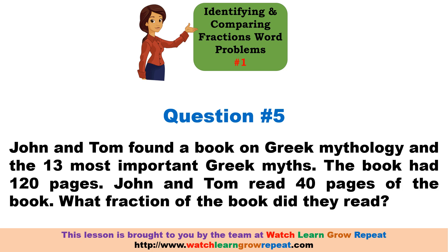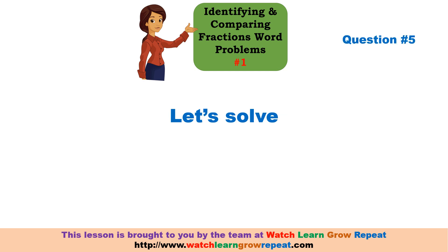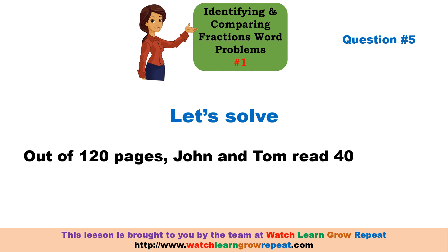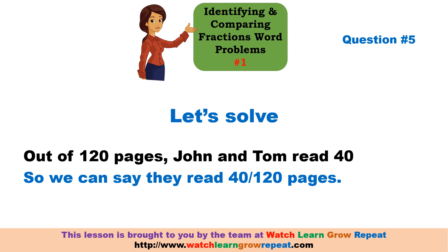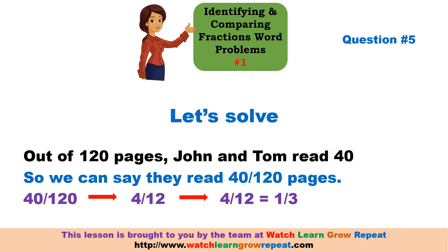Question number five: John and Tom found a book on Greek mythology and the 13 most important Greek myths. The book had 120 pages, and between John and Tom they had read 40 pages. What fraction of the book did they read? Out of 120 pages, they read 40, so that is 40 by 120. This can be reduced by dividing numerator and denominator by 10, giving 4 by 12. Further dividing numerator and denominator by 4 gives one by three. So John and Tom had read one third of the total pages.